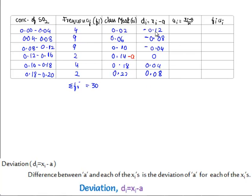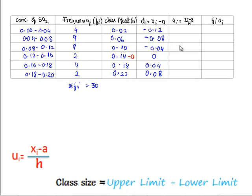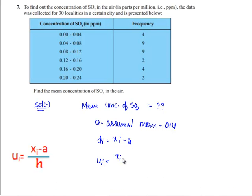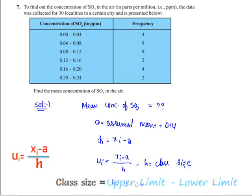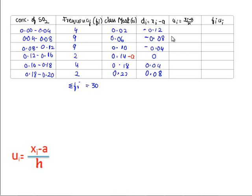We can reduce these values by dividing with 0.04. Hence, taking the formula ui is equal to (xi - a)/h, which is nothing but deviation by h, where h is known as class size. Here we have taken h is equal to 0.04. By substituting the values, we get here -0.12/0.04.